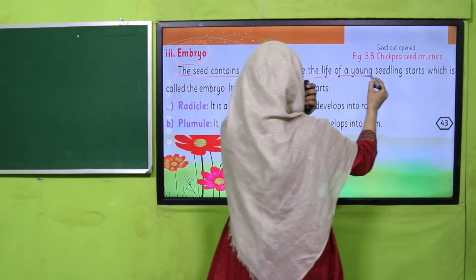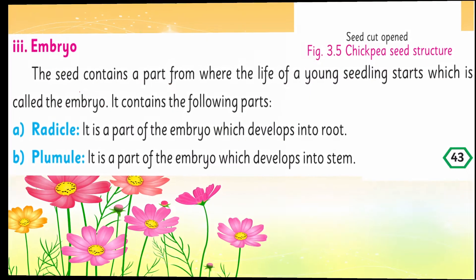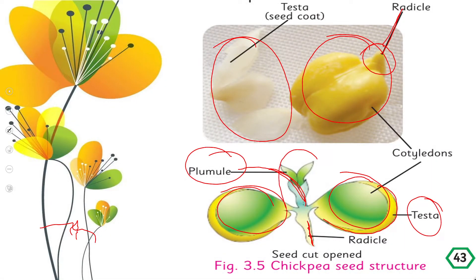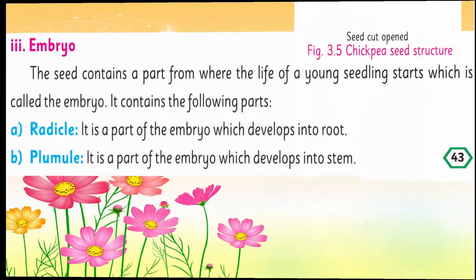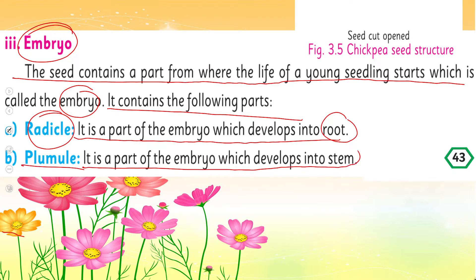The seed contains a part from where the life of a young seedling starts — this is called the embryo. The embryo has two parts: the radicle, from which roots grow, and the plumule, from which the stem grows. The radicle is the part of the embryo which develops into the root, and the plumule is the part which develops into the stem.